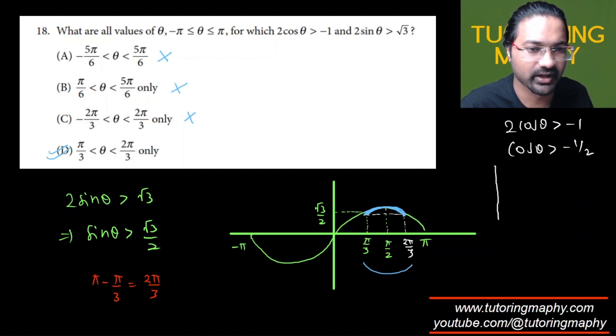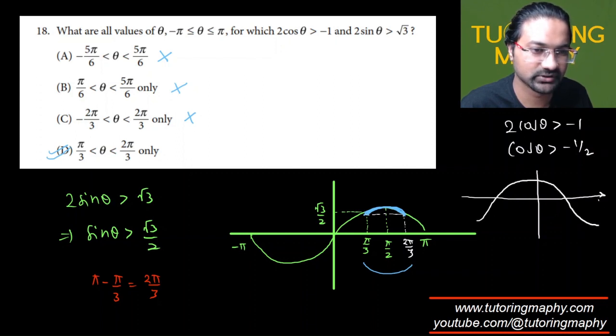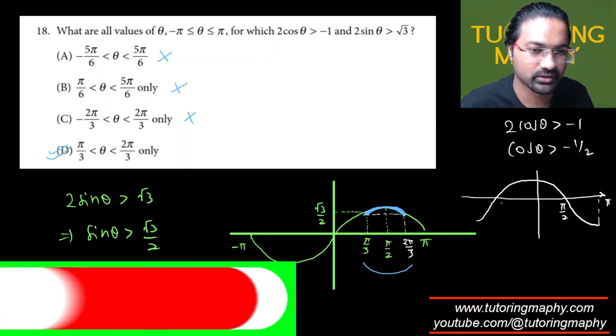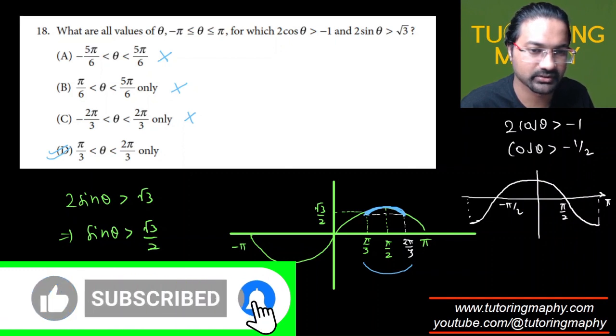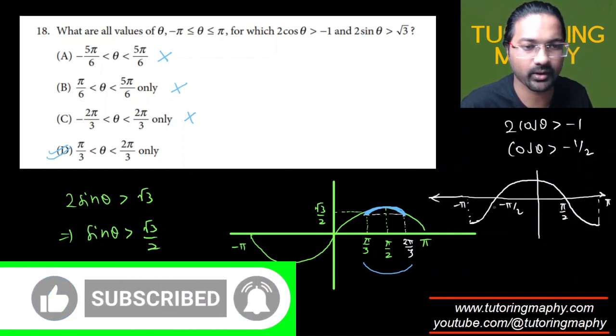Or maybe if I were to make another graph half. It's going to look like this. This is pi. This is pi over 2. This is negative pi over 2. And this is negative pi. Okay.